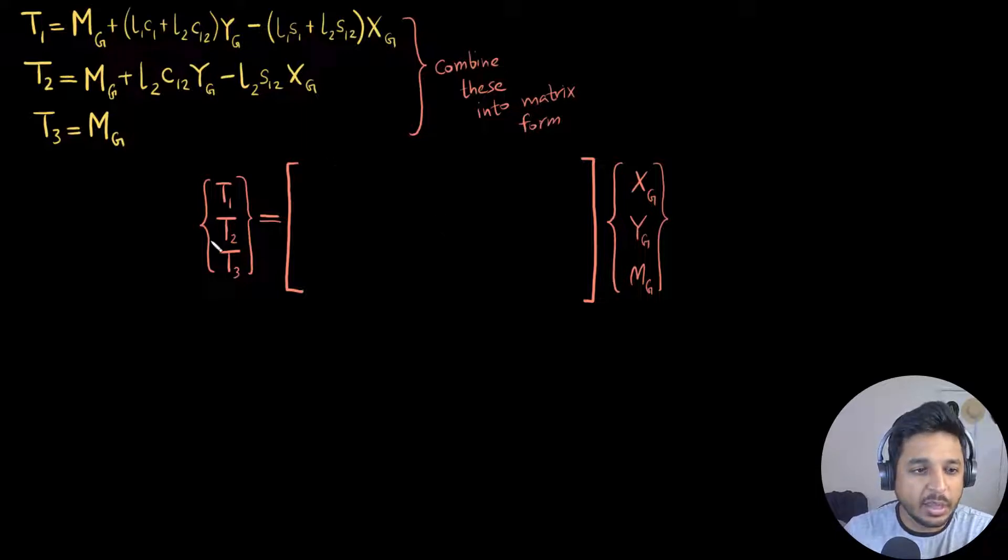All I have done is written the left terms in a vector, which is t1, t2, and t3, which are the torques that need to be generated by the motors. On the right, I have written xg, yg, and mg, where xg and yg are the forces that need to be exerted by the end gripper, and mg is the moment that needs to be exerted by the end gripper. Once I have written this, all I need to do is fill out this matrix.